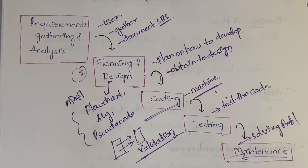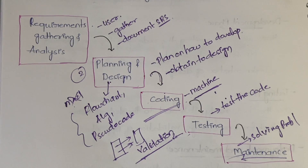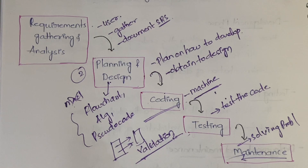We actually have five stages in the Waterfall Model: Requirements Gathering and Analysis — collect requirements from the user, gather and document them into an SRS document. Planning and Design — establish a plan with all stages and steps, and obtain a design such as a flowchart or algorithm. Coding — convert the design into machine-understandable form. Testing — validate requirements and test the code. Maintenance — deliver the project software to the customer, take feedback, and resolve any issues they have.